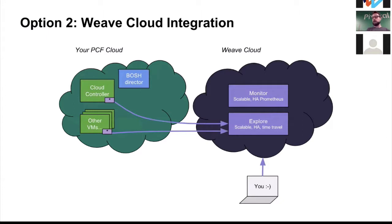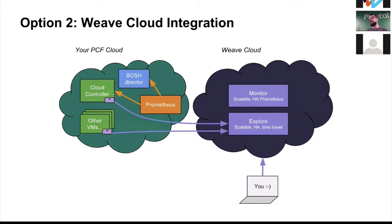Luke and I thought about how hard it would be to get Cloud Foundry and BOSH metrics over to Weave Cloud. It turns out it's not that hard — the tile spins up a Prometheus instance inside the PCF environment that scrapes two APIs: the BOSH director API, to see what deployments and workers are in the cloud, and the Cloud Controller API, to learn how many apps are deployed and whether there are errors. Then it forwards all metrics straight into Weave Cloud.